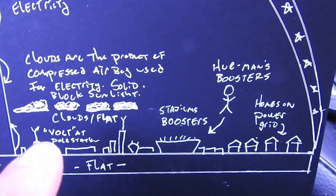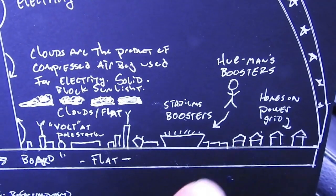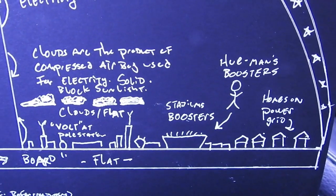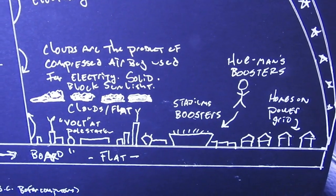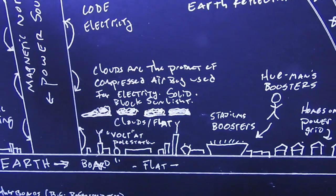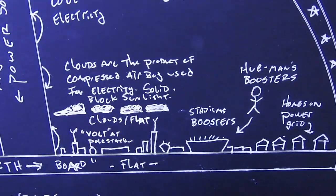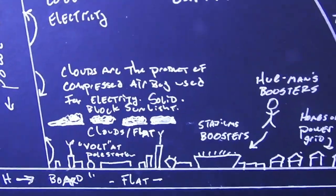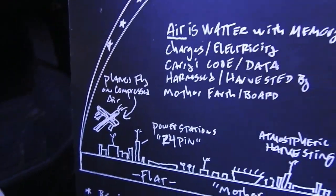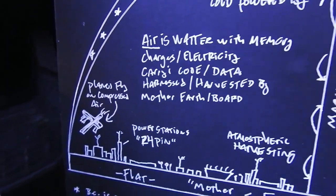Homes are set up on a grid — a power grid. Clouds are just compressed air, the product of compressed air, like what comes out of turbines, because they compress the air to fuel everything.